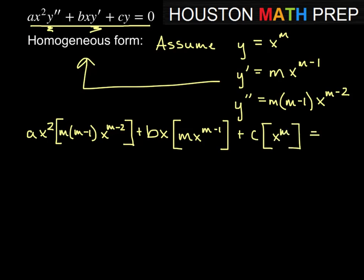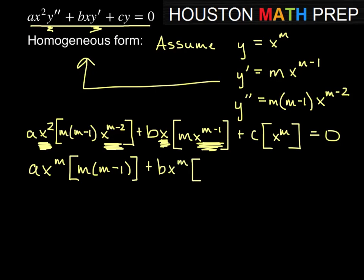Now let's see what happens here. You notice we can combine powers of x. Here we have x squared times x to the m minus 2. If we add those exponents together, 2 plus m minus 2 gives us x to the m, and we get m times m minus 1. Then we have one copy of x and m minus 1 copies of x, so we combine those to get x to the m times m, and then c times x to the m.